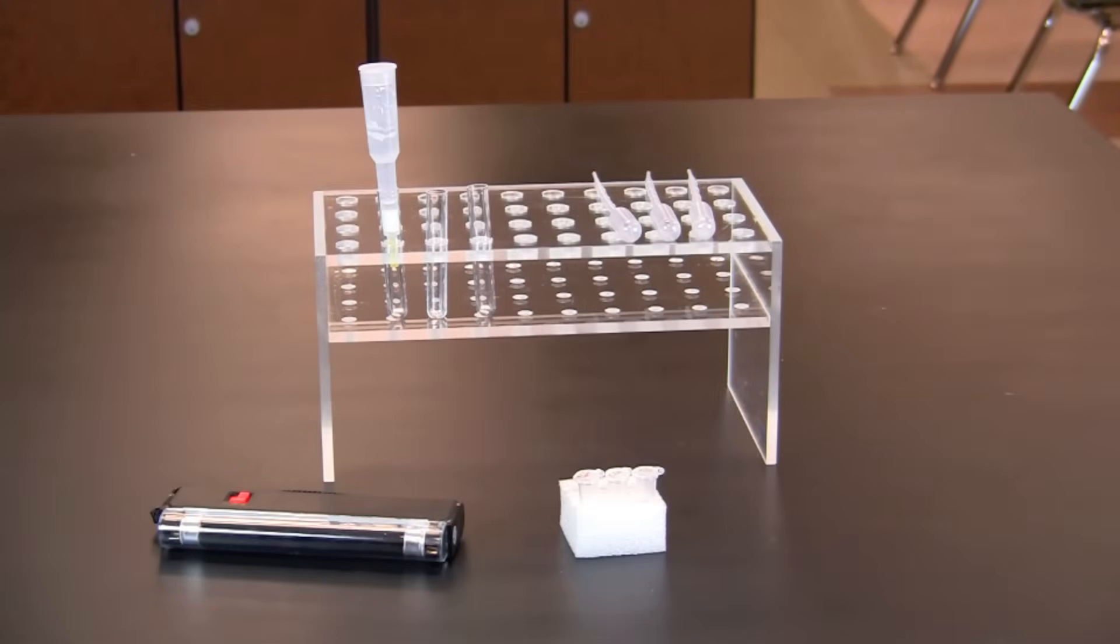In this video you will learn how to perform hydrophobic interaction chromatography or HIC. Chromatography is a powerful technique for separating proteins in a complex mixture. HIC separates molecules based on their hydrophobicity. In this activity, green fluorescent protein or GFP will be separated from the thousands of endogenous proteins present in the E. coli used to produce the recombinant protein.